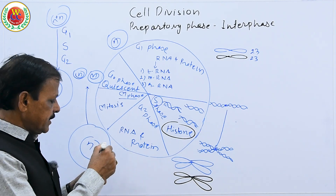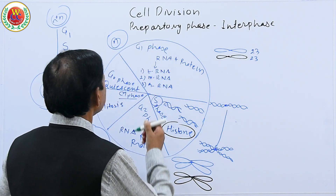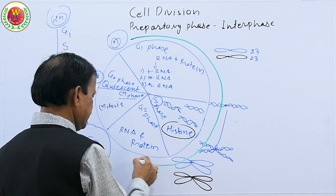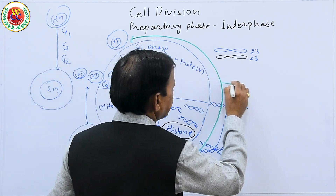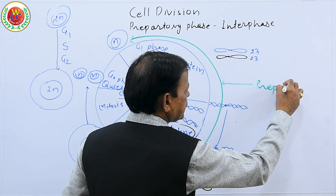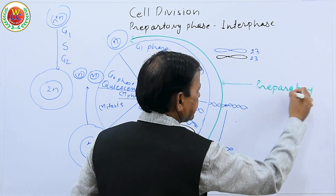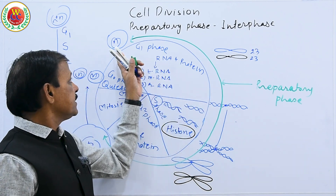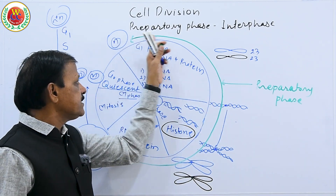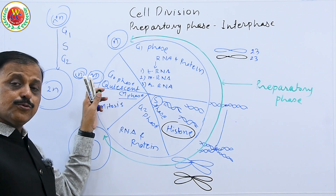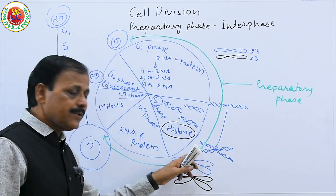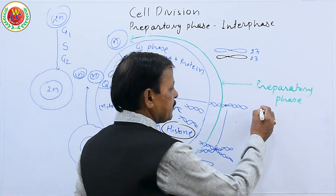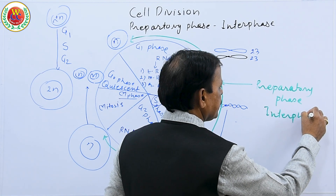The phase from G1 through G2 is called the preparatory phase because the cell is prepared for cell division. It is also called interphase because it is the phase between two cell divisions — the cell undergoes division, produces two new daughter cells, and then once again undergoes the preparatory phase before dividing again. Hence, this phase between two cell divisions is also known as interphase.